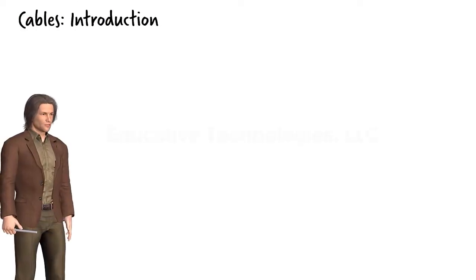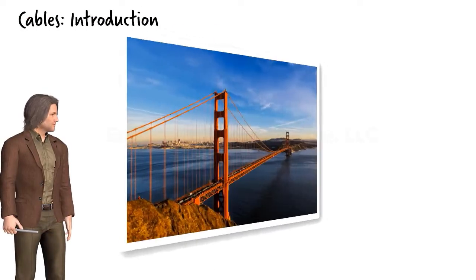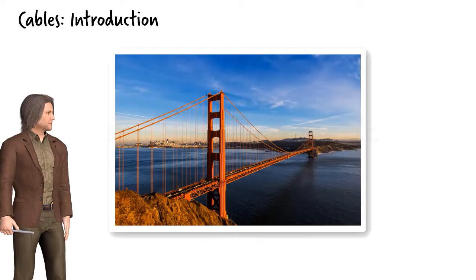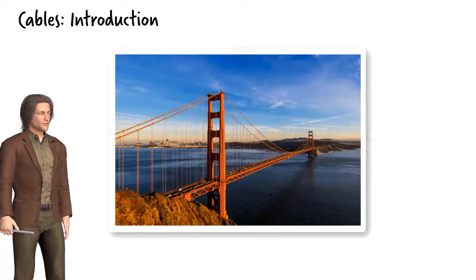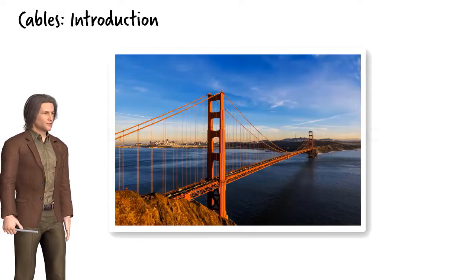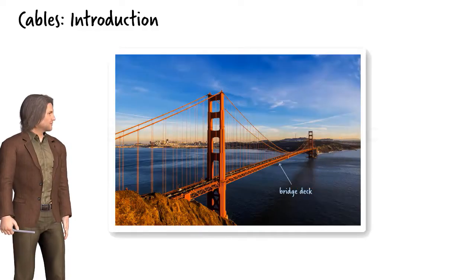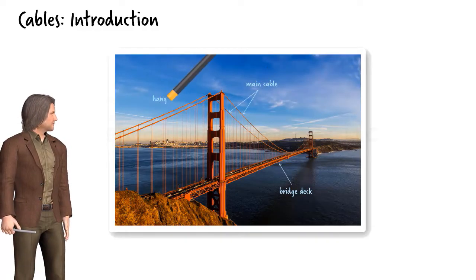The Golden Gate Bridge is an iconic structure that utilizes cables to carry loads. Such cables are routinely used in bridges and other types of structures for load transfer. This lecture series deals with an introduction to the analysis of cables. The Golden Gate Bridge is a suspension bridge. Its deck is suspended from a pair of main cables using a series of vertical hangers.